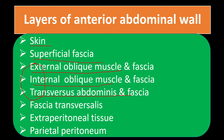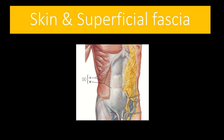The other structures are fascia transversalis, extraperitoneal tissue, and parietal peritoneum. Looking first at the skin and superficial fascia — we can see this area in the cross-section: this area is the skin, and after the skin there is another structure visible in the cut section.